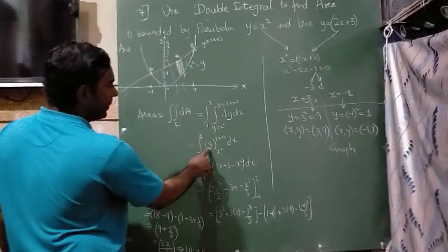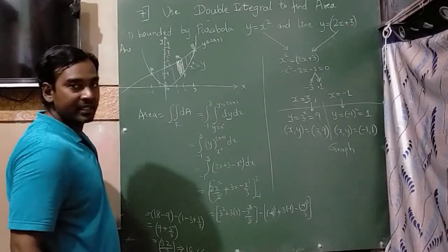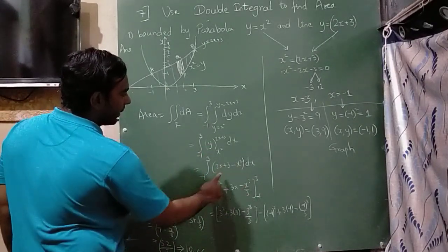So integration of 1 will become y. So lower limit is x square, upper limit is 2x plus 3. So here I am going to substitute 2x plus 3 minus x square.